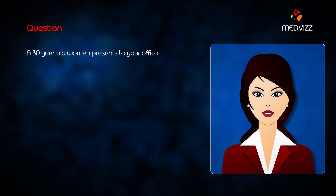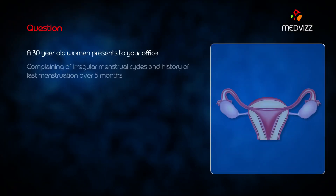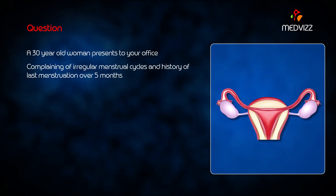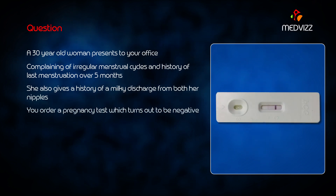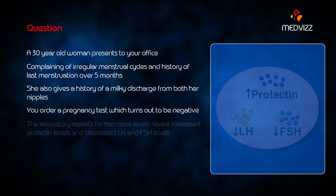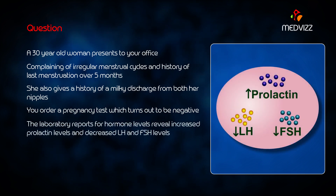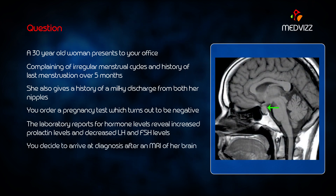A 30-year-old woman presents to your office complaining of irregular menstrual cycles and a history of lost menstruation over five months. She also gives a history of a milky discharge from both her nipples. A pregnancy test turns out to be negative, and laboratory reports reveal increased prolactin and decreased luteinizing hormone and follicle stimulating hormone. You decide to arrive at a diagnosis after an MRI of her brain.